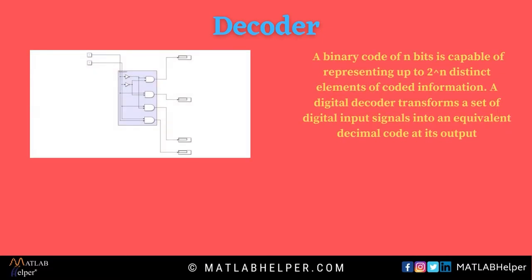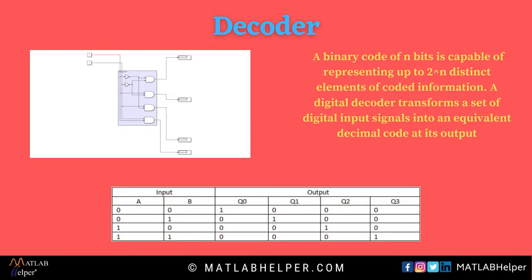A decoder is a unique circuit that accepts multiple inputs and outputs. If N inputs are given to the decoder, it provides 2 to the power N number of outputs. Decoders are used to convert a digital signal into an analog signal. It primarily uses AND gates for the operation. Following is a truth table for a decoder circuit.